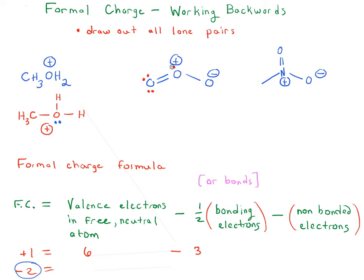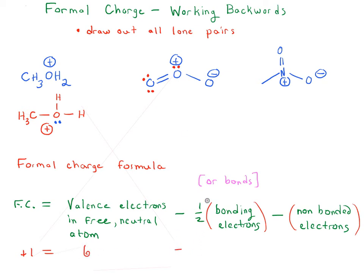In order for it to actually have a formal charge of plus one, you're going to need to draw in a lone pair of electrons on that oxygen. Just to double check: the formal charge is plus one, the valence electrons for oxygen is six, we've got a total of six bonding electrons so one-half times six, and we've got two non-bonding electrons. So six minus three minus two should give us an answer of one, and that is the case. So that is correct.